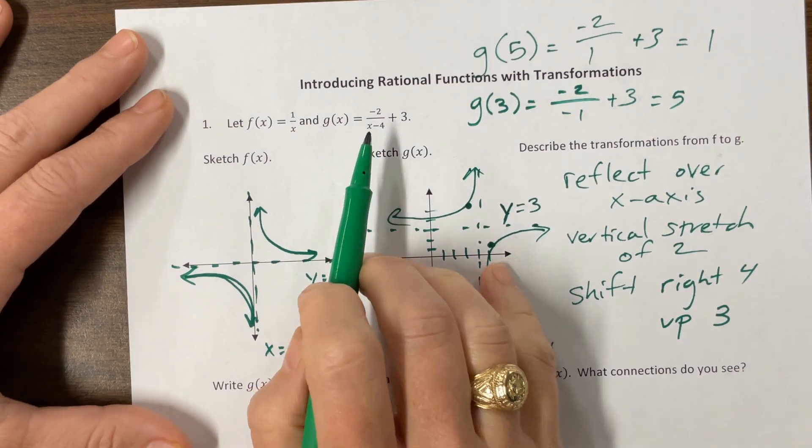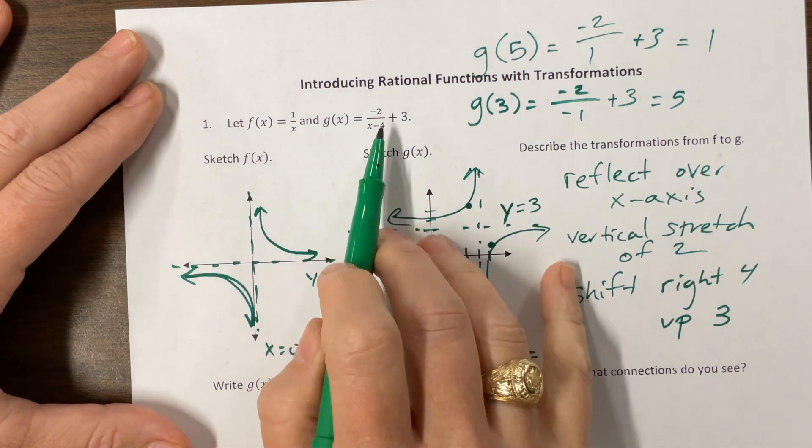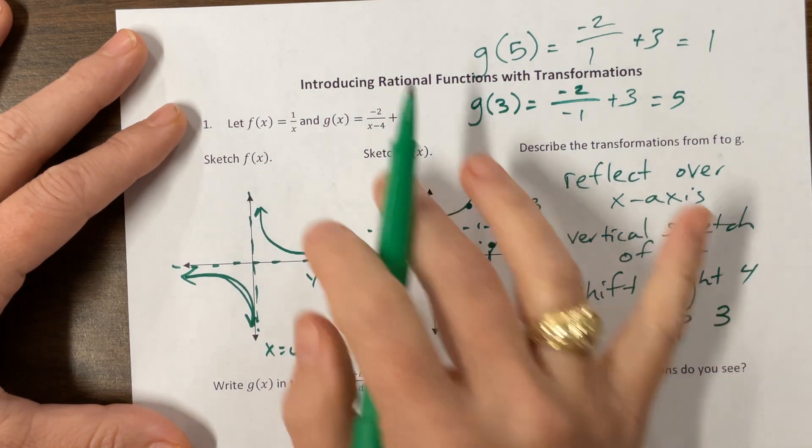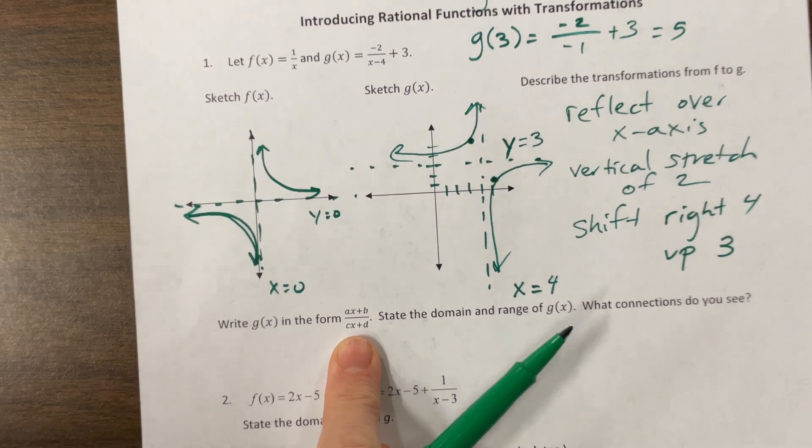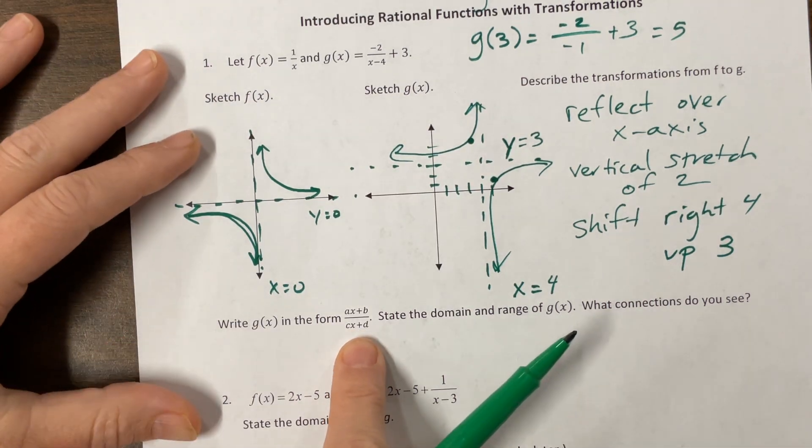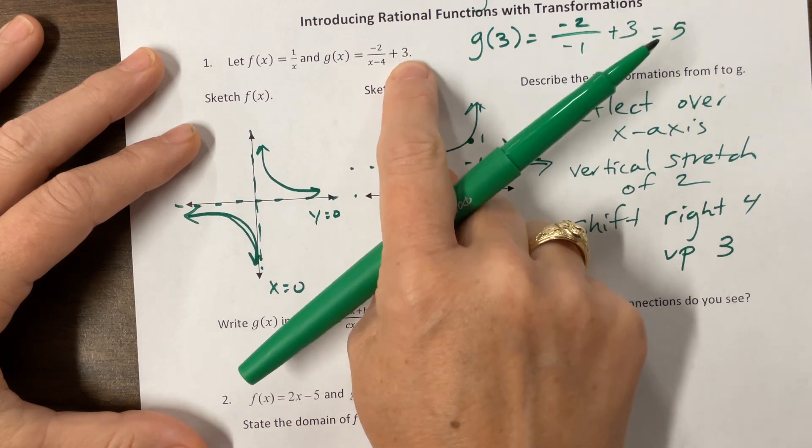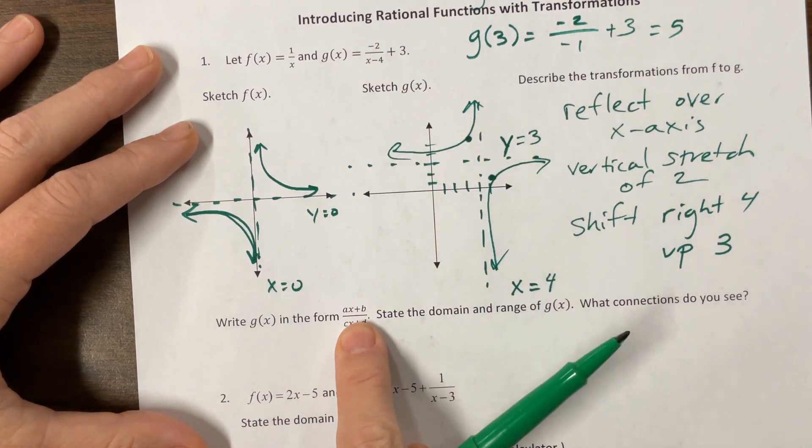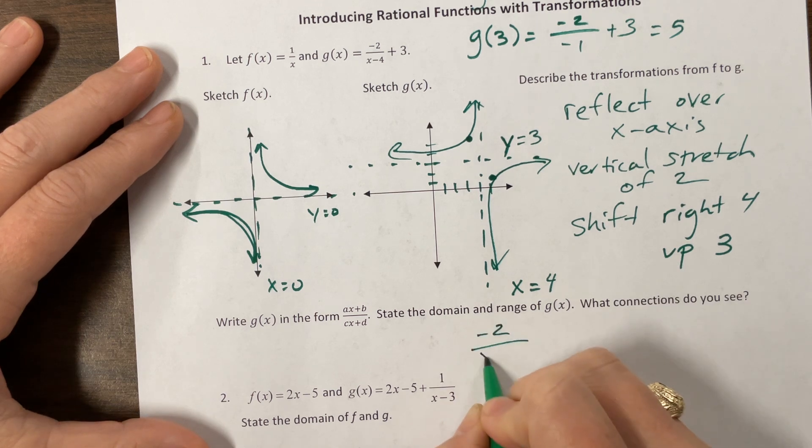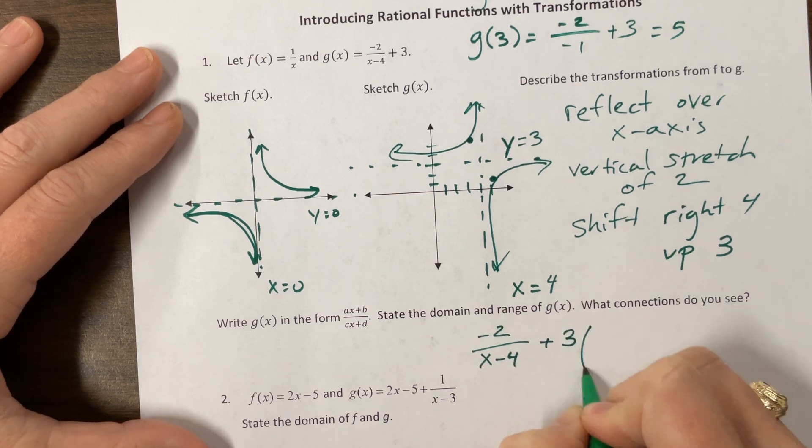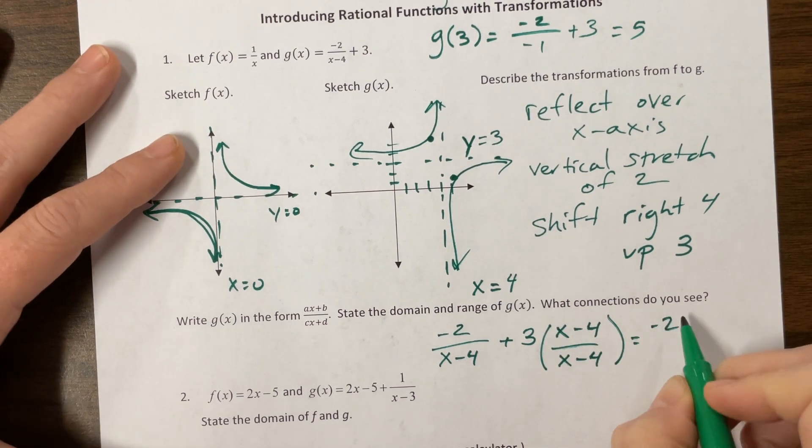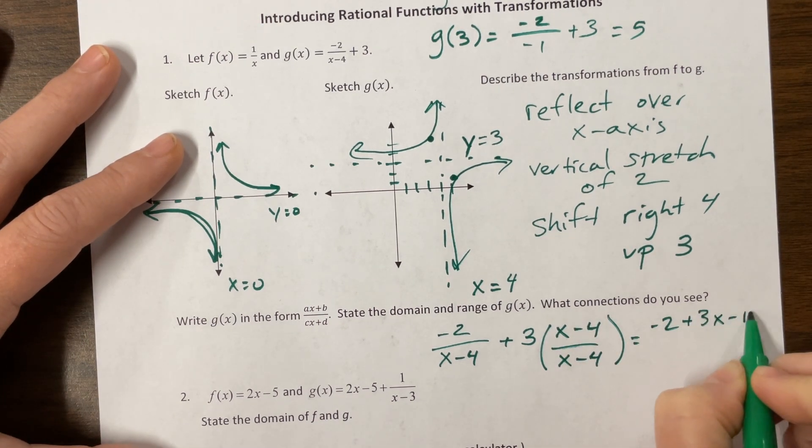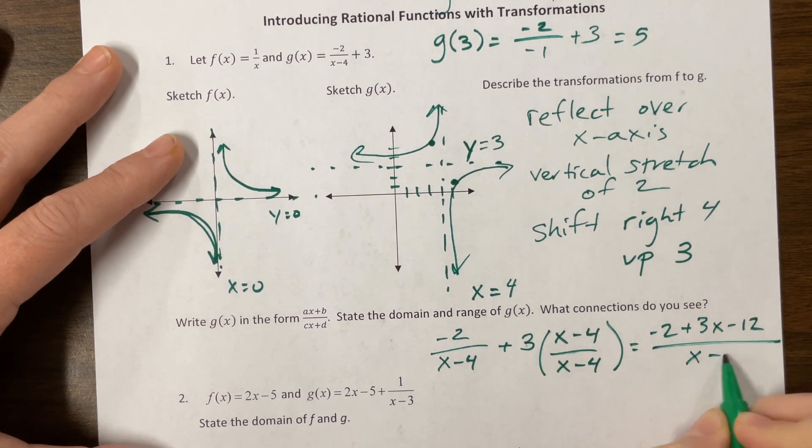Well this is not the form that we usually see our equations in. What we do typically see is we see it in this form where we have ax + b over cx + d. So what I want to do is I want to get a common denominator here and see if I can get this into that form. So I have negative 2 over x minus 4 plus 3 times x minus 4 over x minus 4. This gives me negative 2 plus 3x minus 12 all of that has that denominator now of x minus 4.